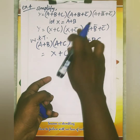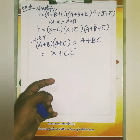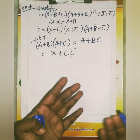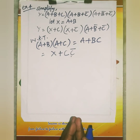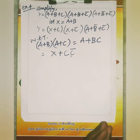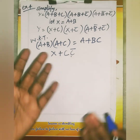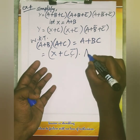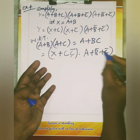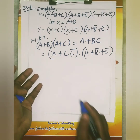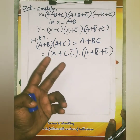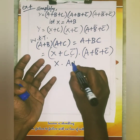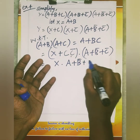What is your C term? C times C bar. So if we compare X plus C times C bar, C times C bar gives 0. So the result is X times B bar plus C bar.